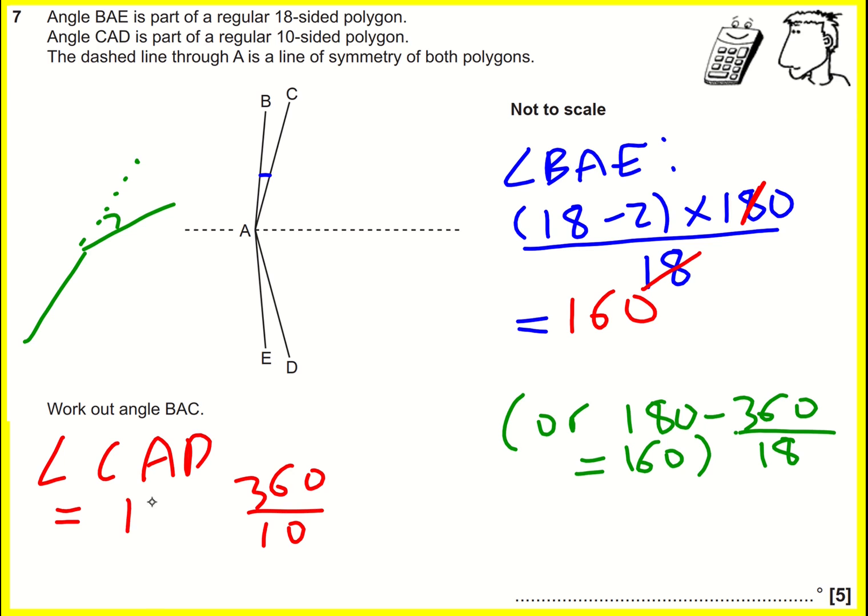And then to get the interior angle, I would do 180 minus that, which is going to be 180 minus 36, because when I divide by 10, that just goes. And that's going to give me 144.